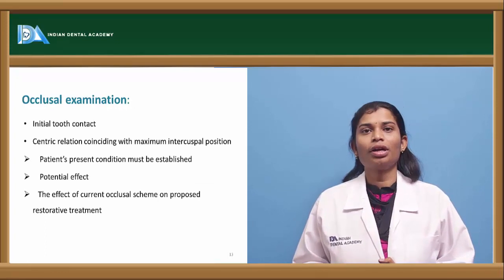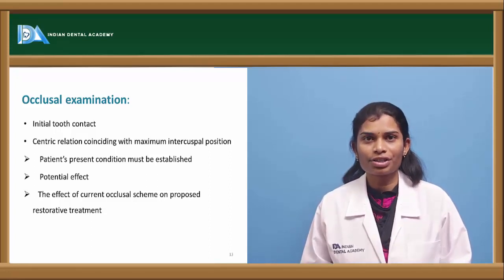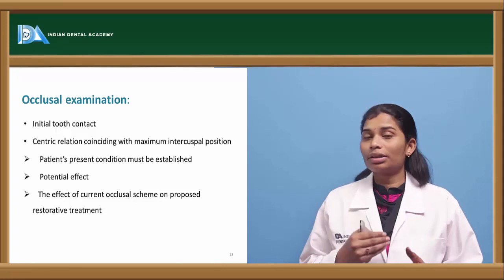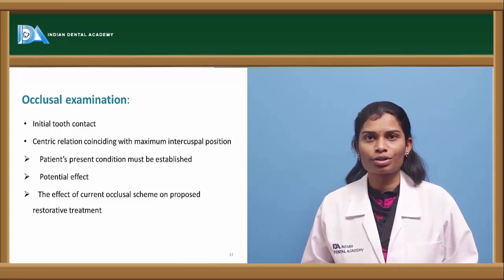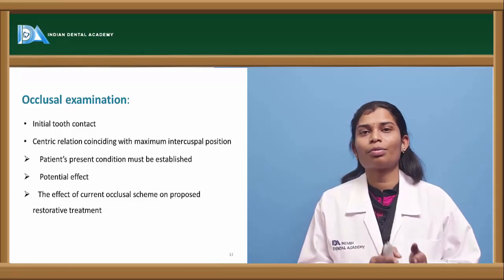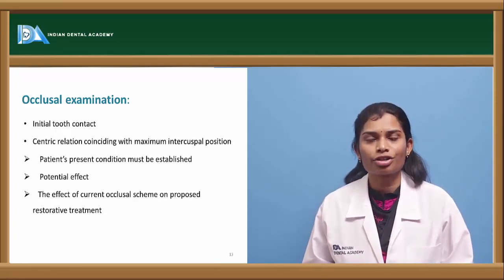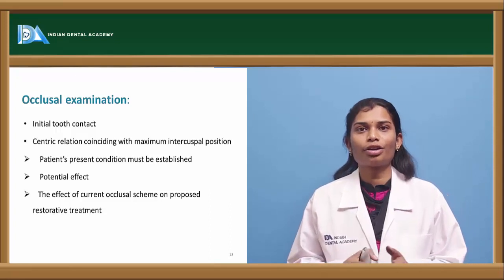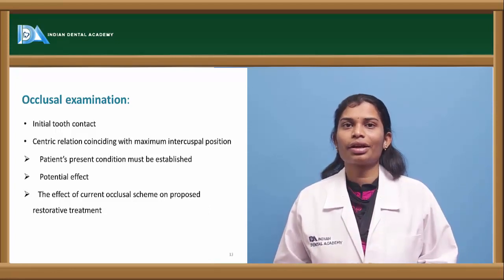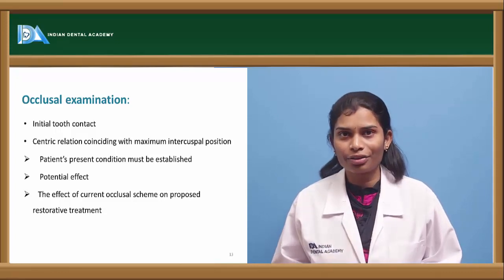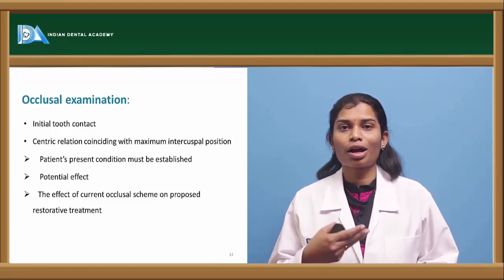In intra-oral examination of occlusion, collect information related to the first tooth contact, any deviation with that contact, and the patient's present occlusion scheme — whether it is mutual function, group function, or canine guided. Record the occlusion and aim to restore the same occlusion after giving the FPD. If there is deranged occlusion, consider long-term intermediate restorations to correct the occlusion scheme, and assess the potential effects of delaying treatment and the impact of any new occlusion scheme on the TMJ.